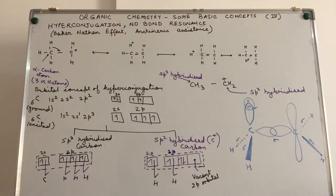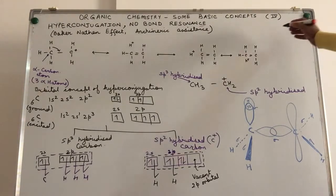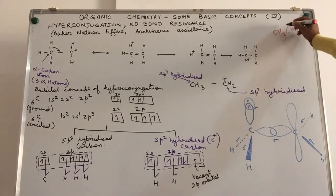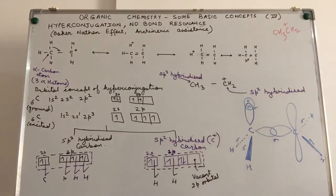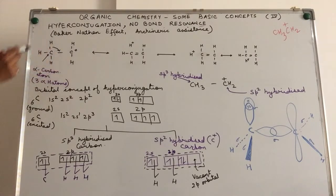What I mean over here is, let's take a very simple example. We've taken the example of the ethyl cation over here. Ethyl is CH3-CH2. We are talking about the behavior of CH3-CH2 positive ion. Written in structural form, this is CH3-CH2 positive over here. So there are two hydrogens and there's a positive sign.